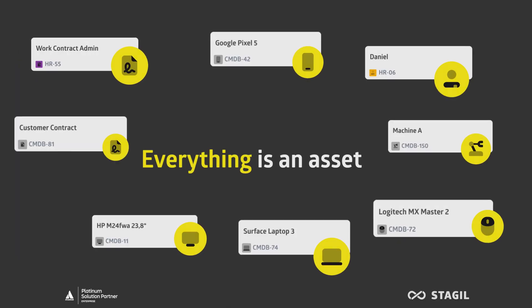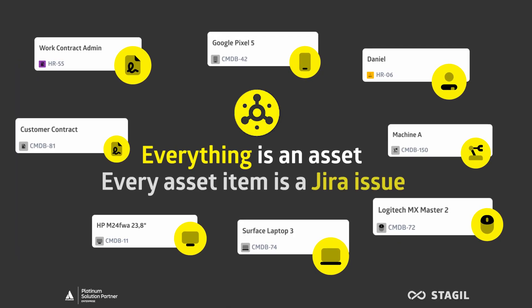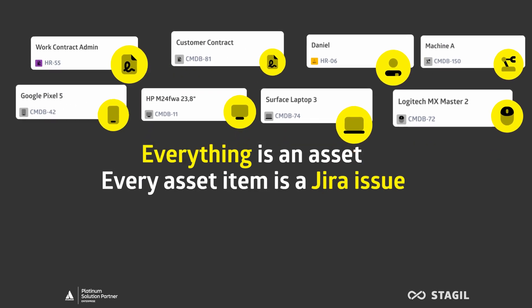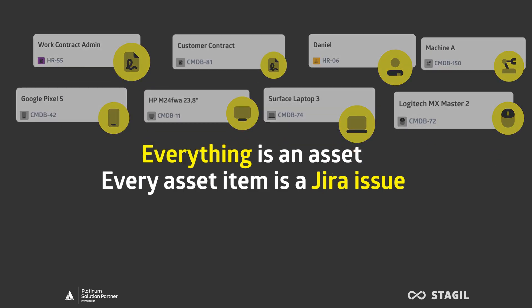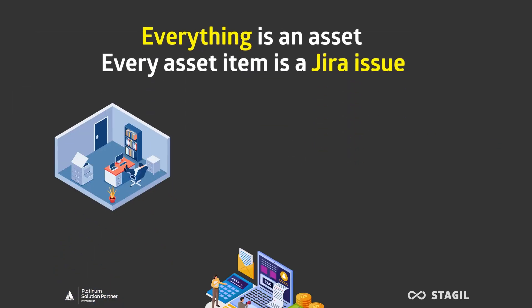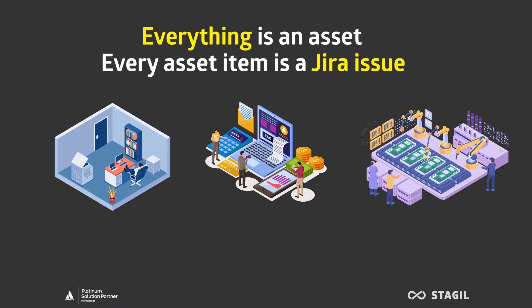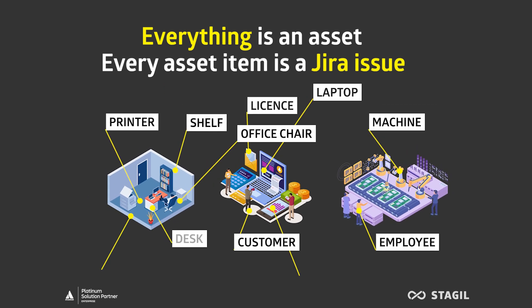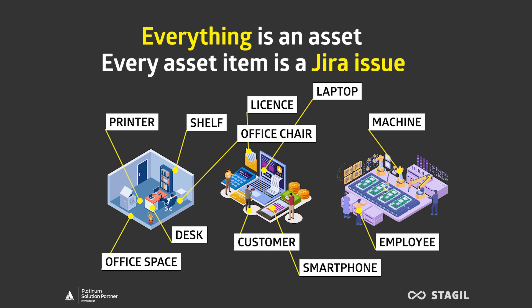Everything in your company is an asset, and in Stagyl Assets, every asset is a Jira issue. This includes hardware, configurations, employees, payroll, Wi-Fi routers, printers, or basically anything that is important to your business.